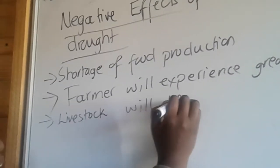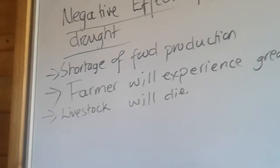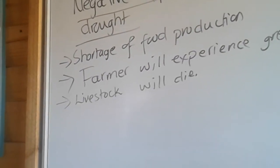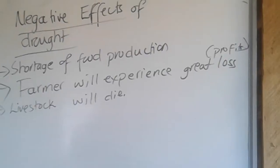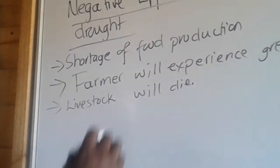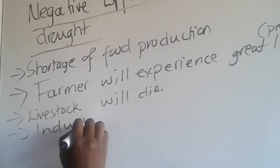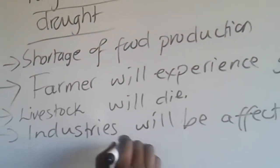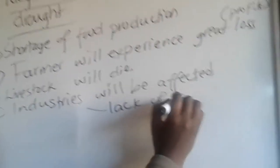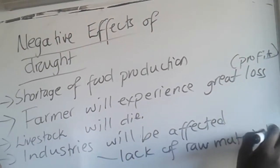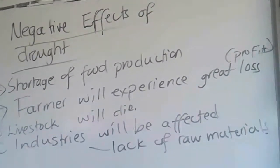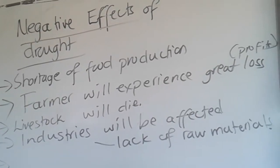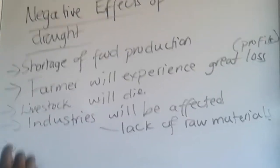Our livestock will die because we no longer have water to maintain grass cover, and without grass cover our livestock are affected. Industries will also be affected — there will be a lack of raw materials, because most raw materials come from agricultural production. If we don't have much food production, we are going to lack raw materials for industries.